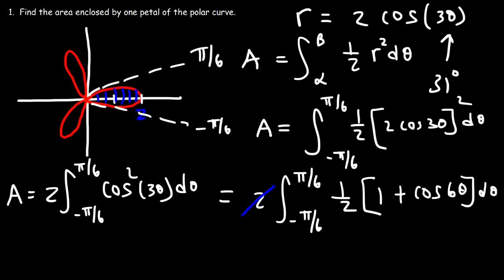Evaluated from negative pi over 6 to pi over 6. Plugging in pi over 6: we get pi over 6, and 6 times pi over 6 is pi, and sine of pi is 0. Then minus (negative pi over 6), and 6 times negative pi over 6 is negative pi, and sine of negative pi is also 0. So we have pi over 6 plus pi over 6, which is 2 pi over 6, and we can reduce that to pi over 3. That's the area of just one petal. If you want to find the area for all three petals, just multiply by 3 and it's going to be pi.